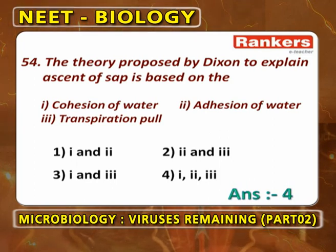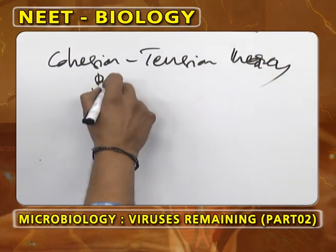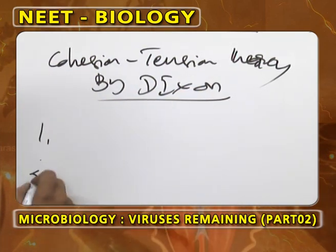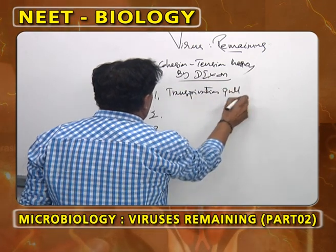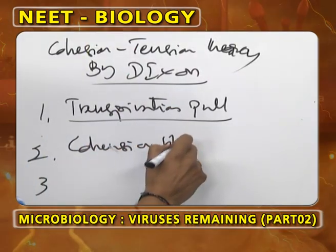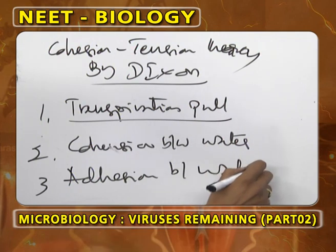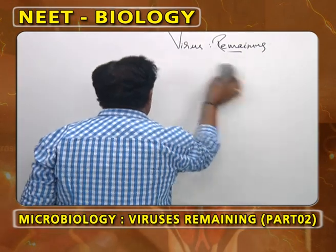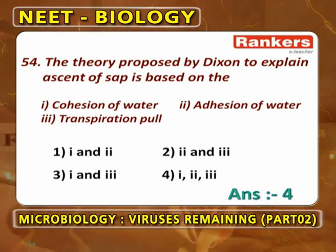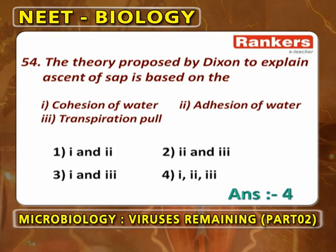The theory proposed by Dixon to explain ascent of sap is based on cohesion tension theory. This theory states that three physical forces help in ascent of sap: transpiration pull, cohesion between water molecules, and adhesion between water molecules. All three play a vital role in ascent of sap.